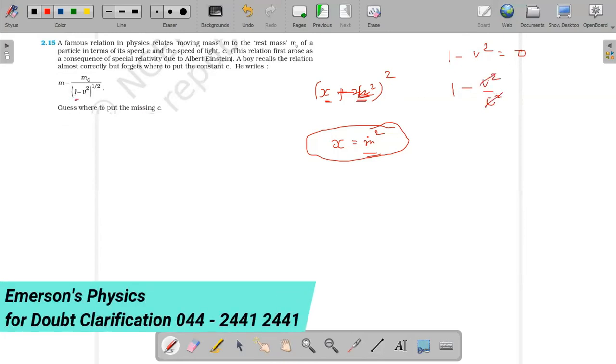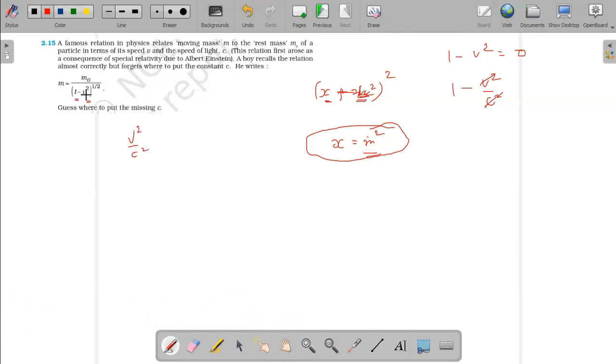So v squared by c squared - he missed that c squared because this ratio must equal one. The velocity of the particle divided by velocity of light. He missed the term velocity of light, which is a constant.